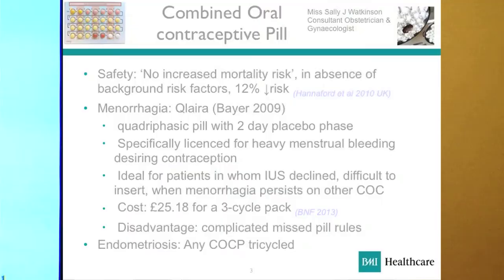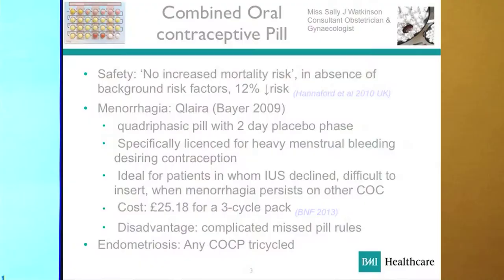I want to talk about endometriosis, which is a common complaint in my world. It's fair to say you'd want to abolish the physiological cycle, and any combined oral contraceptive pill that is tricycled will be of benefit to down-regulate endometriosis — and this is where cost comes in. I won't talk too much about PCOS, but certainly for patients with that condition presenting with hirsutism, acne, and high testosterone symptoms, a Dianette or Yasmin-type preparation would be beneficial.